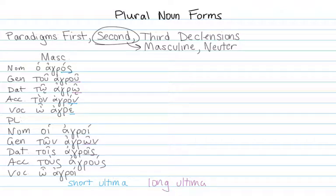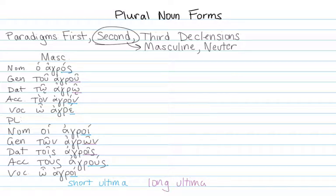On and ois in the genitive and dative follow what you'd expect: the ultima looks long, is long, and has a circumflex. For the other three, the ultima looks long, but there are historical linguistic reasons why it's treated as short. In other words, the words used to have different forms — it was short — they've changed over time, but they still pretend the syllables are short. So we get agroi, agrus, and agroi.